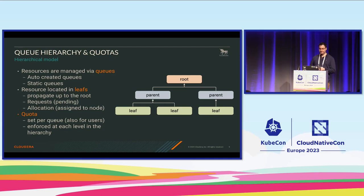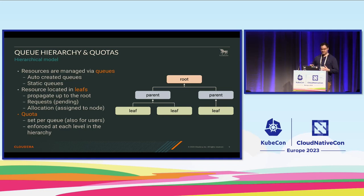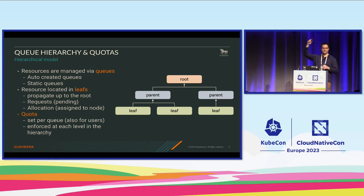Let's talk about quotas. As Wilfred mentioned, we have a hierarchical model — a hierarchy of so-called resource queues — that we use to calculate the available resources to running applications. These queues can be created automatically or defined in configuration files, currently YAML. We submit applications or pods to leaf queues; you cannot run workloads in a parent queue. Whenever there's an allocation or resource request, we do the accounting in the leaf queue, increase counters, and that propagates all the way up to the root queue.